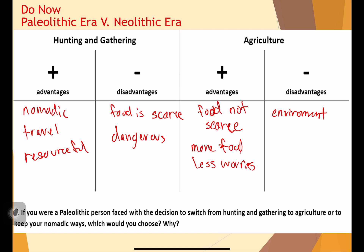You also have to defend your one location. You have to defend your one spot, and people are going to be trying to attack you. Normally as a nomad you can move around anywhere you want, but as a farmer you have to stay put. And lastly, you can't technically just get up and go. Bad things happen and you can't leave. The likelihood of getting up, taking your farm and all your belongings, and just leaving is very unlikely. You kind of have to stay put, which could be bad if there are bandits or danger in your area.